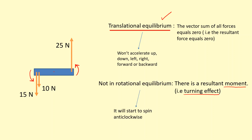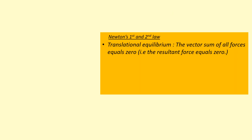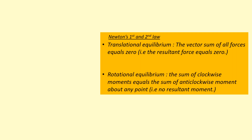This object is not in rotational equilibrium — it's going to start to spin clockwise in this particular case. So for an object to be in complete equilibrium, it needs to be in translational equilibrium, so the total resultant force needs to equal zero. But also, it needs to be in rotational equilibrium. If you add up all the clockwise moments, it must equal the total of all the anticlockwise moments, and this must be true about any point.